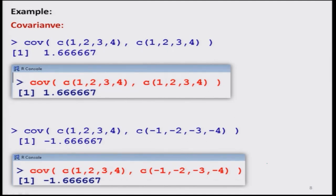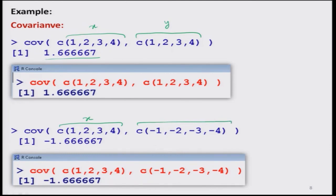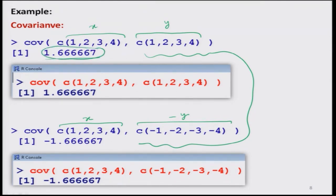First, we take two identical vectors: 1, 2, 3, 4. This is my x vector and this is my y vector. The covariance comes out to be 1.66. Then taking the same x vector but computing the covariance with minus y — all the values are the same but only the sign changes — both covariance values are 1.66, with the difference coming only through the negative sign. This indicates that whether the relationship is positive or negative is determined by the sign of covariance.